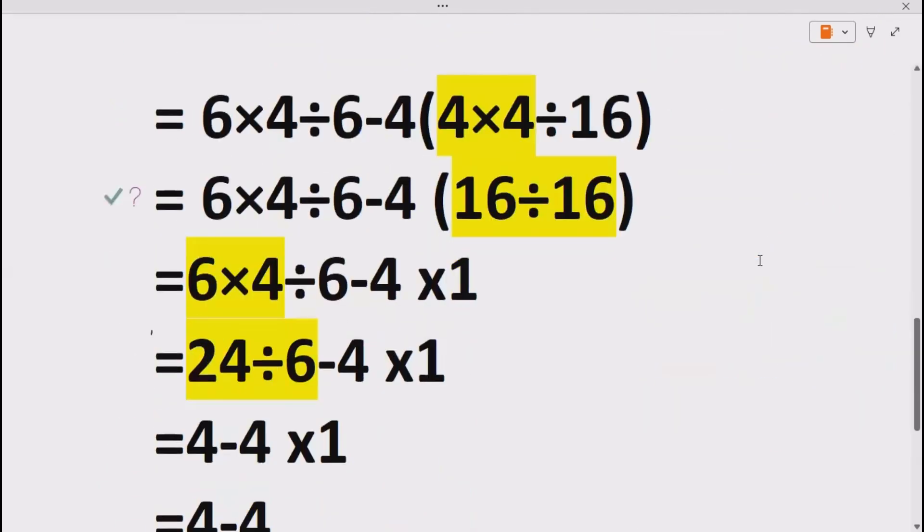Now let's see how we can solve our expression using these rules. We are given 6×4÷6-4(4×4÷16). We have to solve the bracket first according to BODMAS or PEMDAS. So we do multiplication first because multiplication comes before division. 4×4 gives us 16, so we have 16÷16 in the bracket.